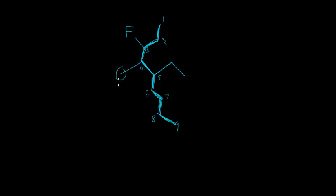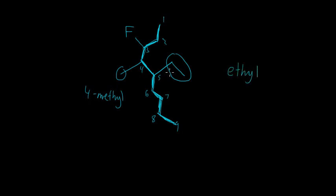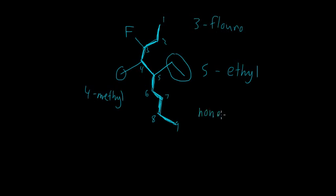Off of the fourth carbon, it's going to be a four-methyl — meth is one carbon. And then off of the fifth carbon, we have one, two carbons, so two is ethyl, making it five-ethyl. And then off of the third carbon, we have a three-fluoro. So now we just have to name this alphabetically. We also have the nonane backbone.